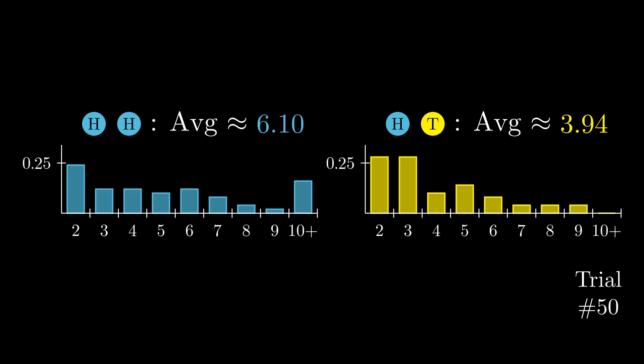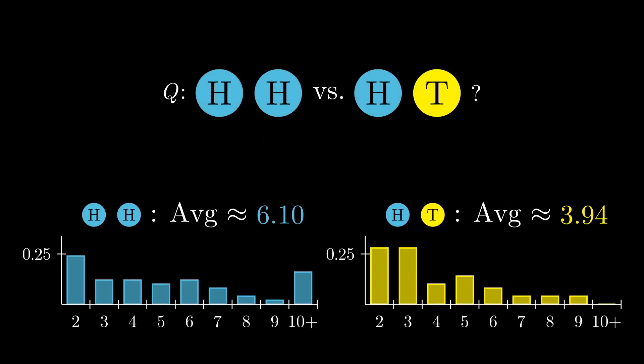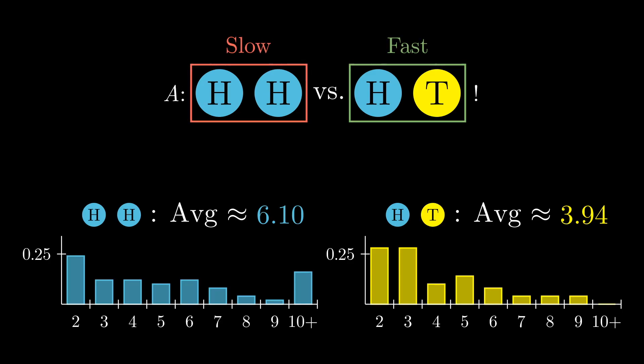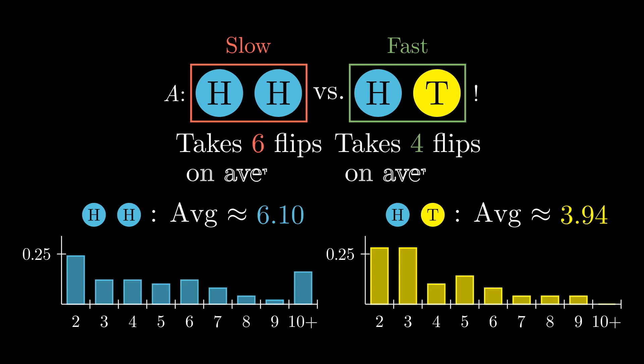After 50 trials we can already see the answer: heads-heads takes longer on average to appear than heads-tails. In our sample, heads-heads often took more than 10 flips to happen, but heads-tails never took more than nine. It seems that heads-heads takes an extra two whole coin flips on average. Of course this is an approximation — the true theoretical average for heads-heads is six and the true average for heads-tails is four.